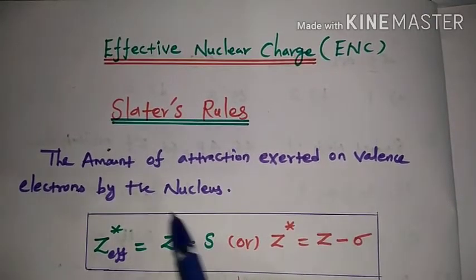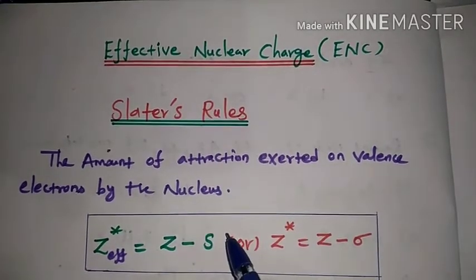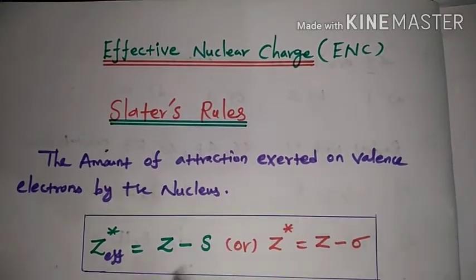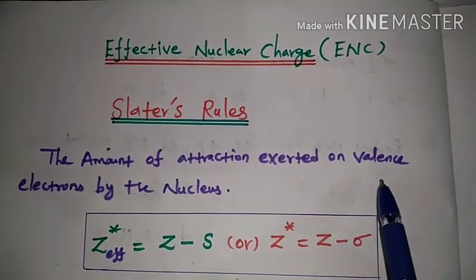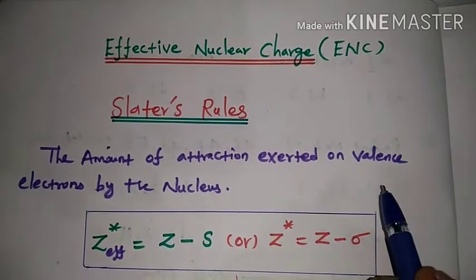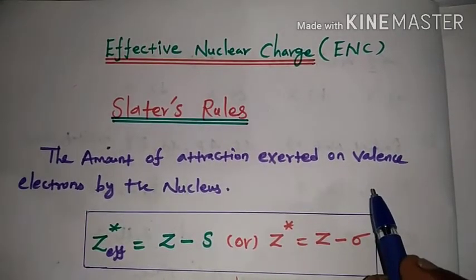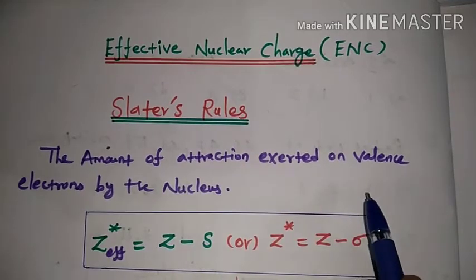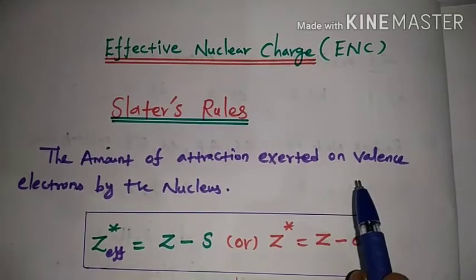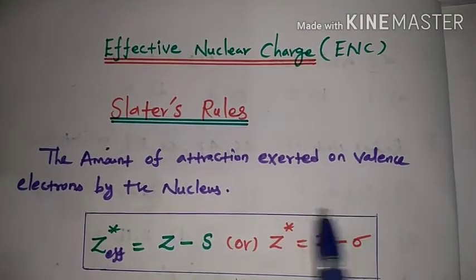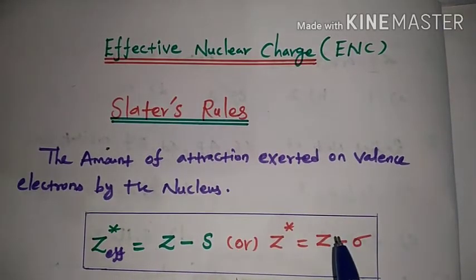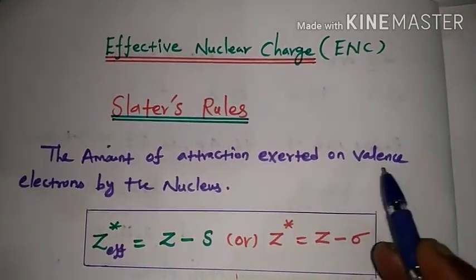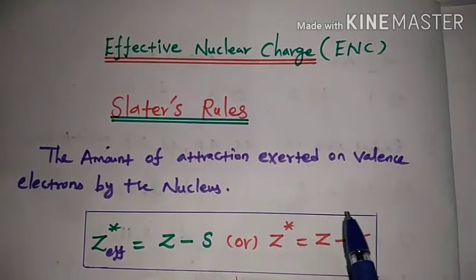Effective nuclear charge is a periodic table trend. From left to right across the periodic table, it increases. From top to bottom of the periodic table, it decreases. This is similar to ionization potential, electron affinity, and electronegativity.